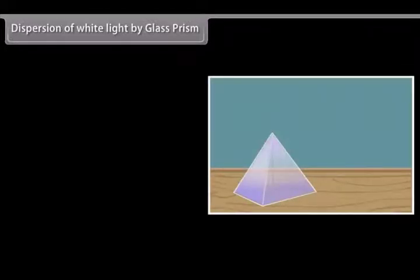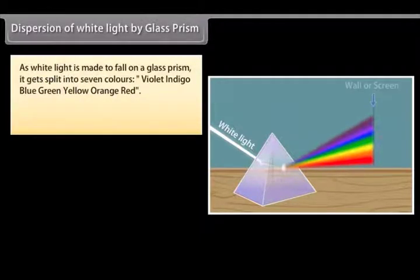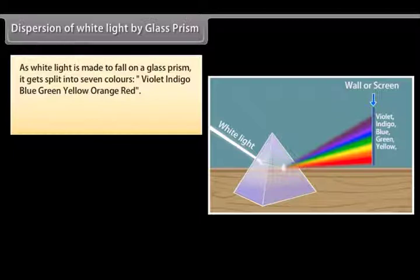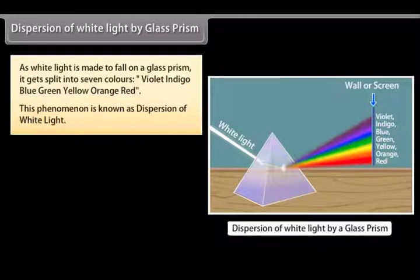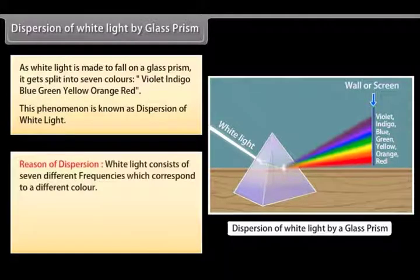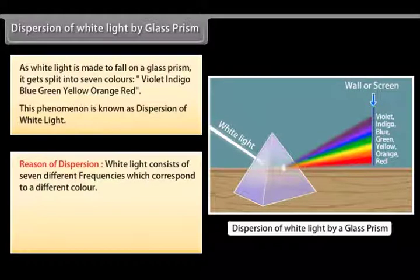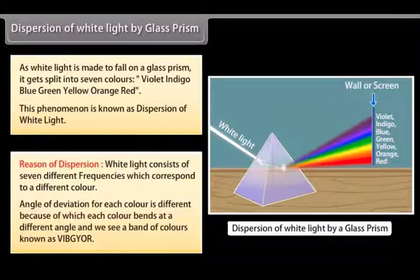Dispersion of white light by a glass prism: When white light is incident on a glass prism, it gets split into seven colors — violet, indigo, blue, green, yellow, orange, red. This phenomenon is known as dispersion of white light. White light consists of seven different frequencies corresponding to different colors. The angle of deviation for each color is different, so each color bends at a different angle, and we see a band of colors known as VIBGYOR.